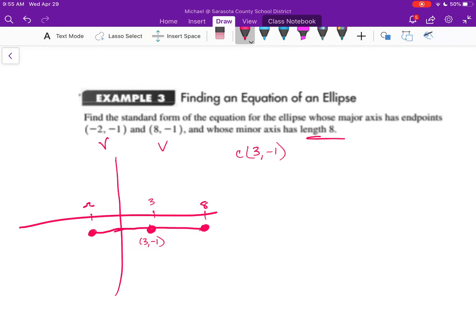And then I have a total minor axis length of 8. So that means I'm 4 above the center and 4 below the center. So 1, 2, 3, 4. So I'm going to be down here. And I'm going to go up 1, 2, 3, and 4.